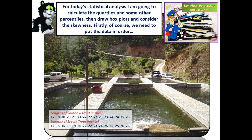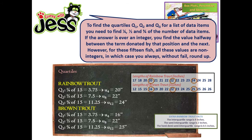Firstly, of course, we need to put the data in order. To find the quartiles Q1, Q2 and Q3 for a list of data items, you need to find a quarter, a half and three quarters of the number of data items. If the answer is ever an integer, you find the value halfway between the term denoted by that position and the next. However, for these 15 fish, all these values are non-integers, in which case you always, without fail, round up.